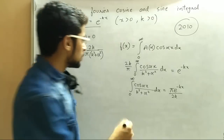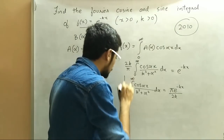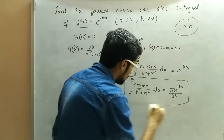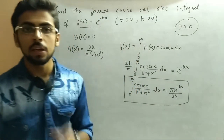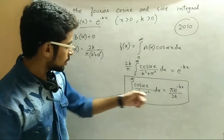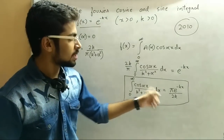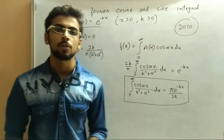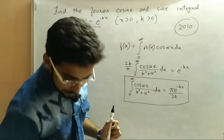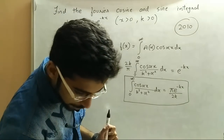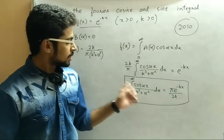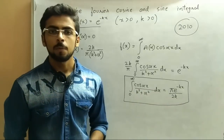This is known as the Fourier cosine integral representation — that is, this is the way we represent the Fourier cosine integral. Let me check the answer. Okay, it is right. So this is the way we have done it. Now we will find the sine integral by the same method and see what the difference is between them.